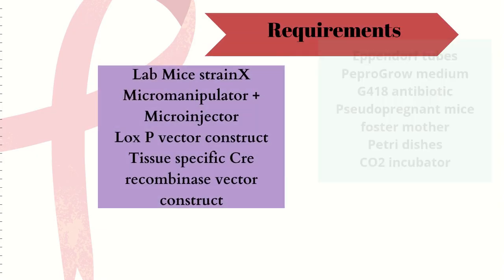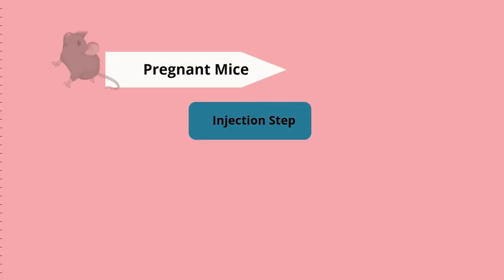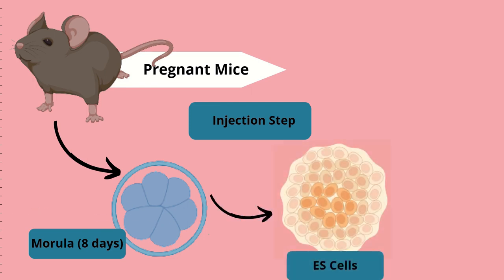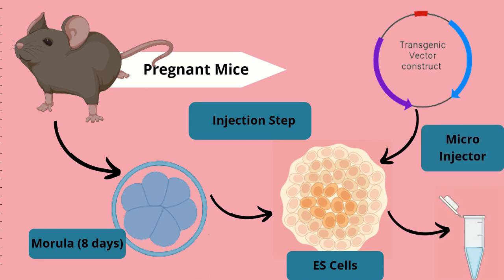For this, the requirements include lab-suited mice strains, vector systems, a microinjector, medium, and miscellaneous apparatus. Firstly, you extract an 8-day blastocyst or morula from a normal pregnant mouse, then extract embryonic stem cells from this morula. The transgenic vector construct is then microinjected into these cells and allowed to homologously recombine with the ES (embryonic stem) cells.